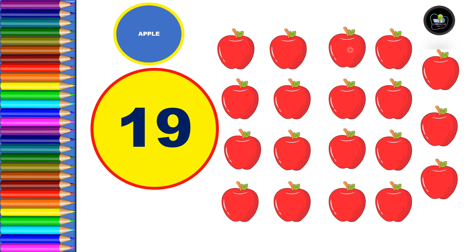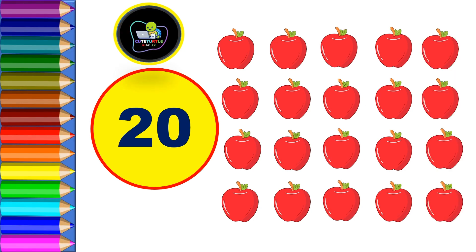Next, nineteen. Let's count: one, two, three, four, five, six, seven, eight, nine, ten, eleven, twelve, thirteen, fourteen, fifteen, sixteen, seventeen, eighteen, and nineteen. So total nineteen apples.